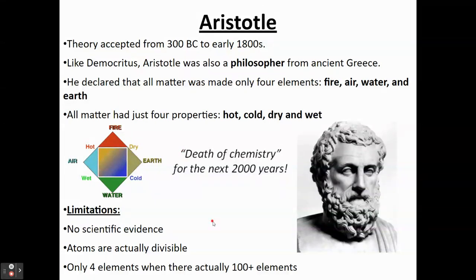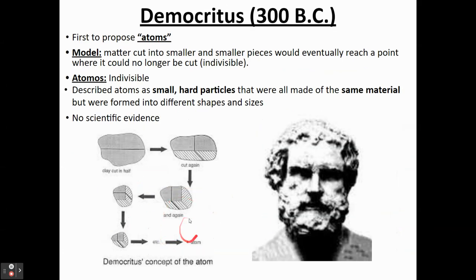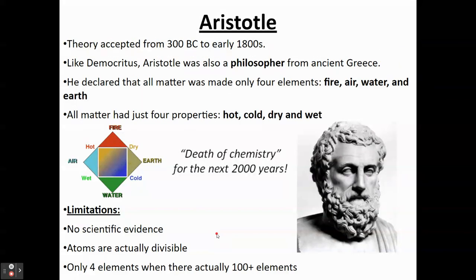This model had several limitations. First, there's no scientific evidence to back it up. We know there are way more than four elements — there are over 100. And we know that atoms are actually divisible; you can divide them into smaller and smaller parts. Philosophers at the time didn't realize that — they thought you couldn't divide the atom into anything smaller. But as we know today, you can. So these ideas were not based on science.